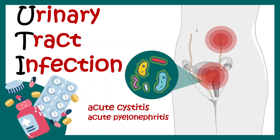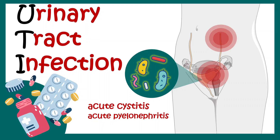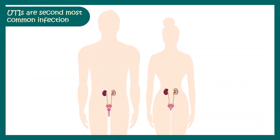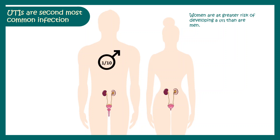In this video we'll talk about urinary tract infection. Urinary tract infection is the second most common infection in the whole world. Women are more susceptible to develop UTI compared to men, probably due to the anatomy of the female. 1 out of 10 males could get UTI whereas 8 out of 10 females can get a UTI infection.